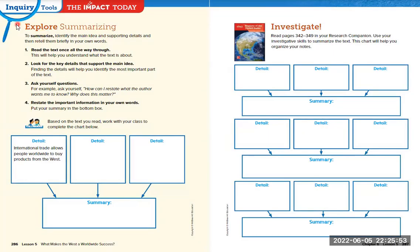You're going to be summarizing, which is something you've done before, so we're just going to be following that same idea. You're going to be reading the text once all the way through. Then you're going to be looking for key details that support main ideas — figure out what the main piece of information is that they keep talking about again and again, and then figure out what details prove that point. Ask yourself: how can I restate this in my own words? What does the author want me to know and why is it important? Then restate the important information in your own words and put the summary in the bottom box.